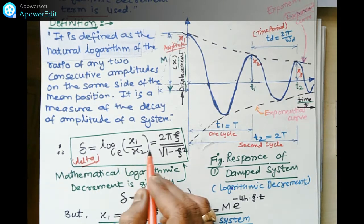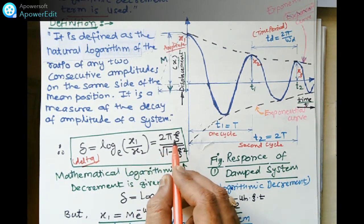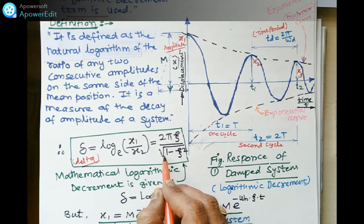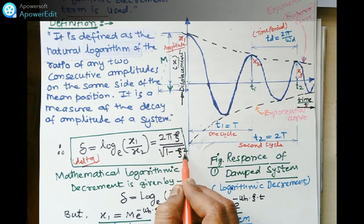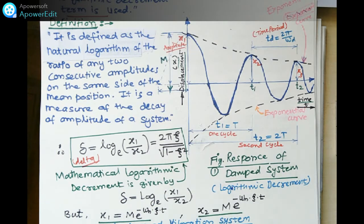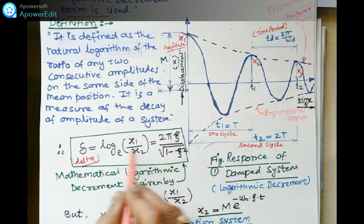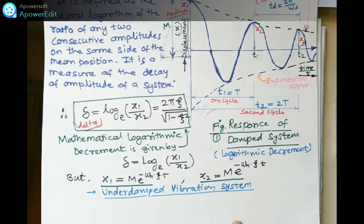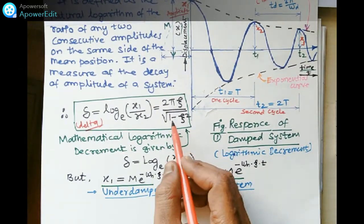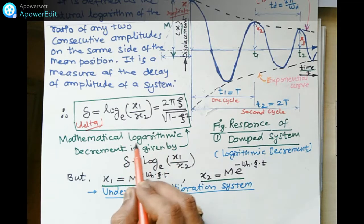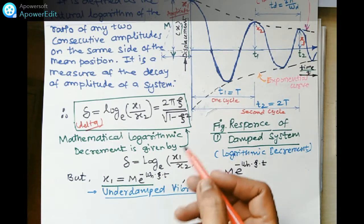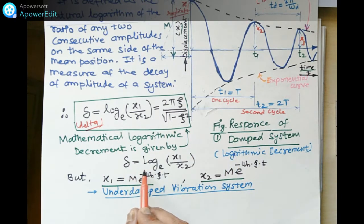The equation we need to prove and derive mathematically is: δ = 2πζ / √(1 − ζ²). This is the mathematical representation for logarithmic decrement. The definition is: δ = logₑ(x1/x2).